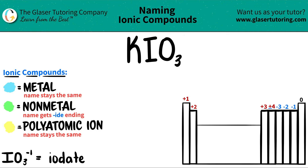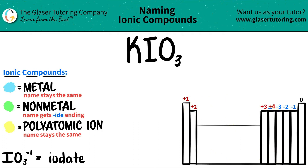In this case, we do have three different elements. We have K for potassium, I for iodine, and O for oxygen. So it's always easiest to find the polyatomic first and then work from there. Remember, polyatomics are never on the periodic table, so you have to memorize them.